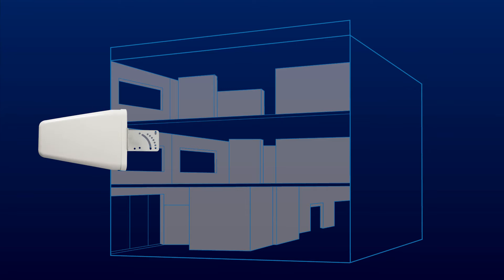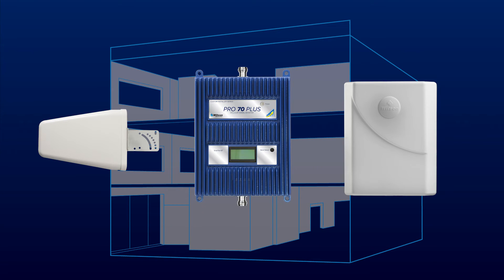There are three components to any cellular system: a donor antenna, a signal booster, and a broadcast antenna.